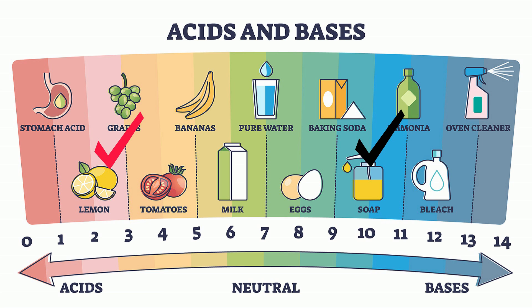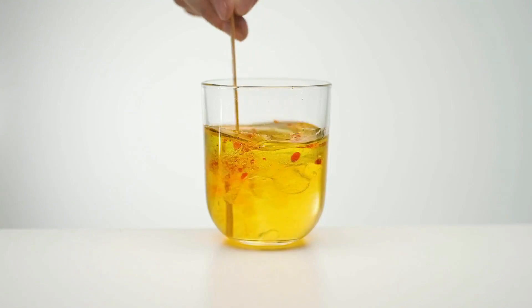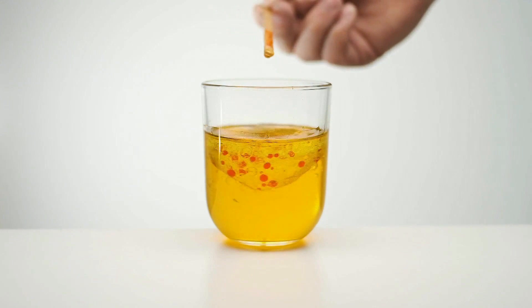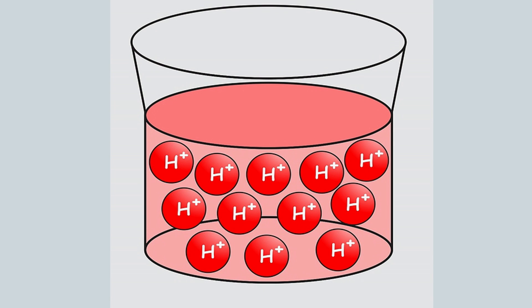Each interval on the pH scale is a tenfold increase, so a solution with a pH of 5 is ten times more acidic than a solution with a pH of 6. The difference between an acid and a base comes down to the number of positively charged hydrogen ions. When an acidic substance is dissolved in water, it releases hydrogen ions.